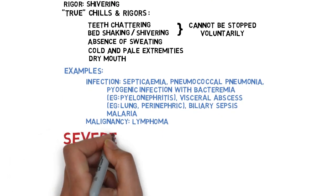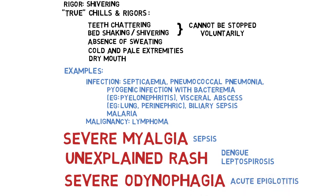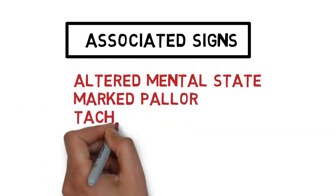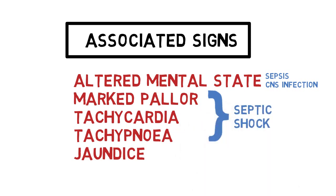Other red flag symptoms are severe myalgia, unexplained rash or severe odynophagia. Severe myalgia is associated with sepsis; rashes are seen in dengue or leptospirosis; severe odynophagia is suggestive of acute epiglottitis, commonly among children. Red flag signs include altered mental state or confusion, marked pallor, tachycardia, tachypnea and jaundice. Altered mental state may suggest CNS infection or sepsis; pallor, tachycardia and tachypnea may suggest septic shock; jaundice may suggest organ failure following septic shock or other causes such as leptospirosis.